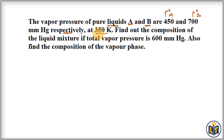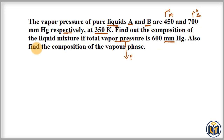At 350 K — that is the temperature given — the question asks us to find the composition of the liquid mixture if the total vapor pressure of the solution is 600 mmHg. The second part asks us to find the composition of the vapor phase.